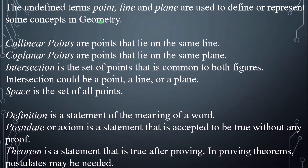The undefined terms — point, line, and plane — are used to define or represent concepts in geometry. For example, collinear points are points that lie on the same line. If you have a line with a set of points on it, those points are collinear because they belong to the same line.